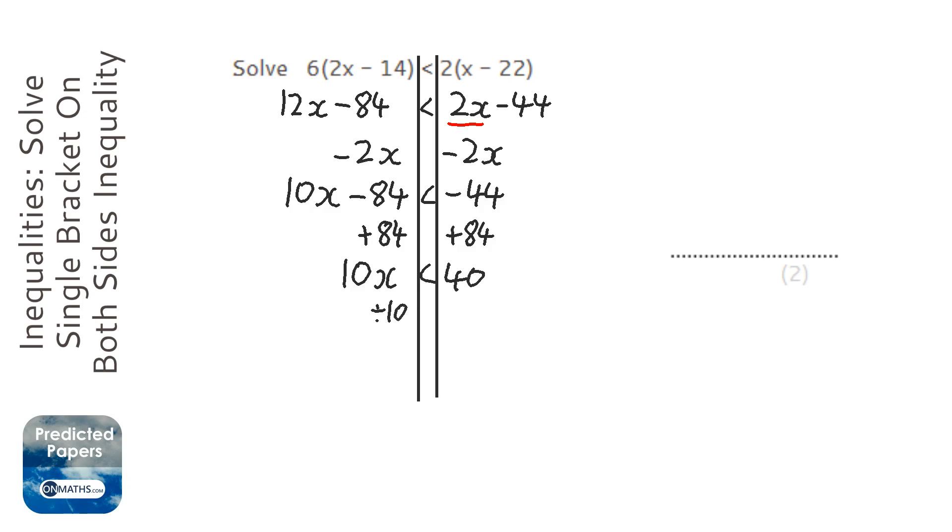And then we're going to divide both sides by 10, so x is less than 4. Now be really careful not to have an equal sign anywhere there.